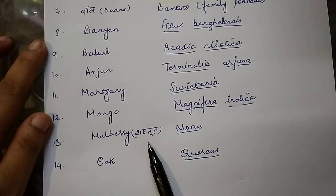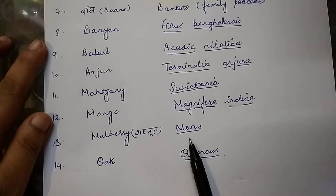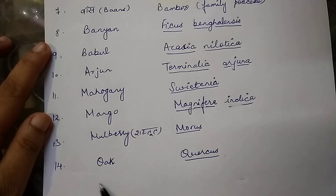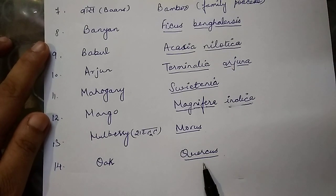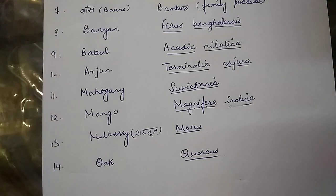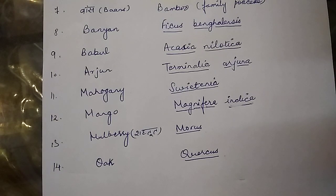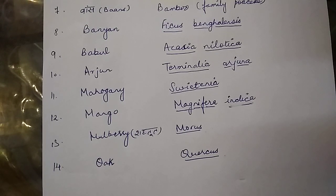Mulberry, called Shahtoot in Hindi, whose scientific name is Morus. Then we have Oak, whose scientific name is Quercus. Please subscribe to my channel to remain updated about biology topics important for 11th and 12th board exams, as well as NEET, AIIMS, and other competitive examinations. Thank you.